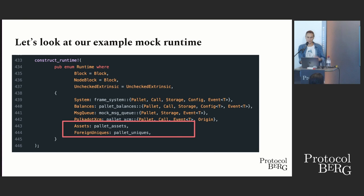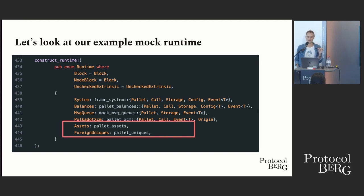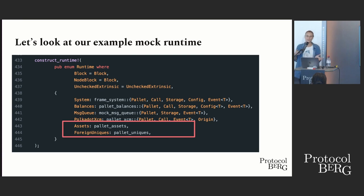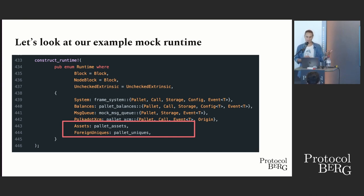Let's look at an example mock runtime — this is the first example provided in the readme. The reason I chose to look at mock runtimes and unit test environments is that there's far less complexity than looking at the code base of a full node and running it in a full node network setting. This gives an idea of what you'd expect in a runtime — it just contains the ability to manage fungible and non-fungible assets.